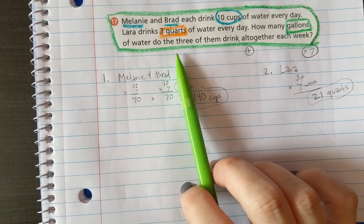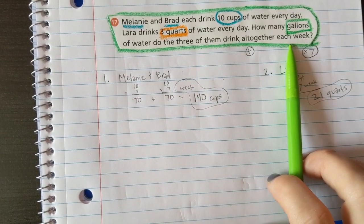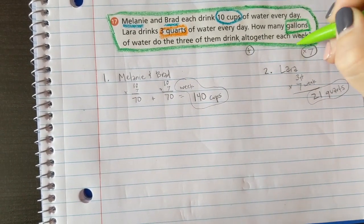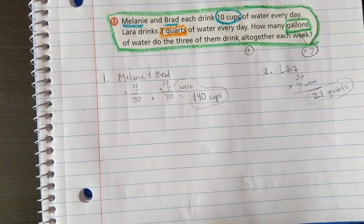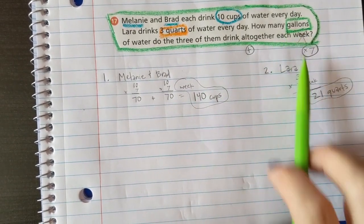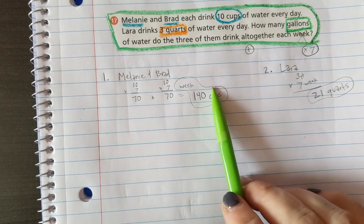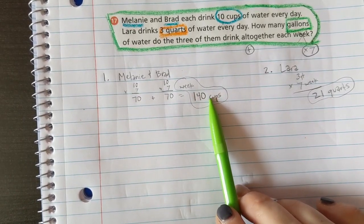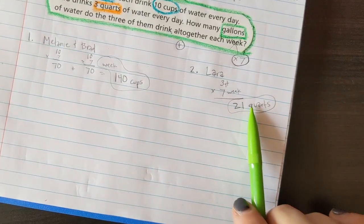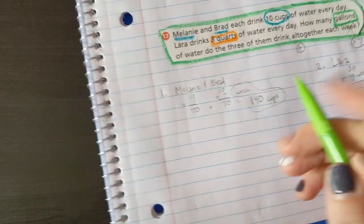How many gallons of water do the three of them drink all together each week? So I've already figured out the week stuff, that is done, taken care of. But I need to know all of this in gallons, so I can convert this one to gallons and this one to gallons and then add them together.